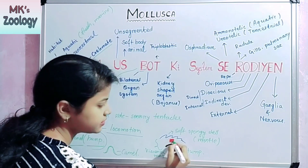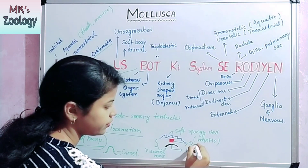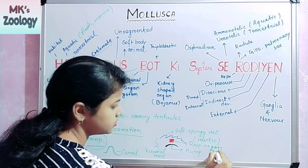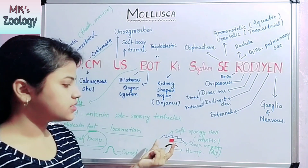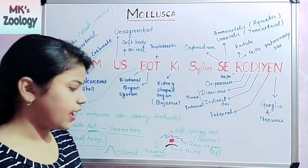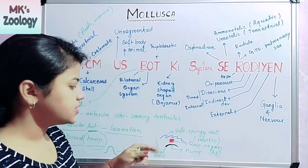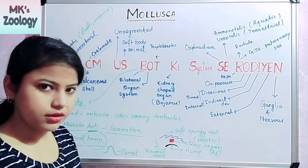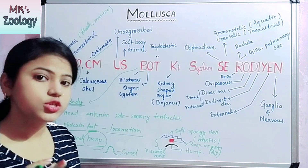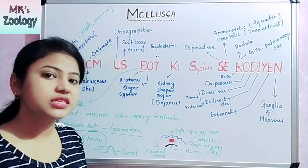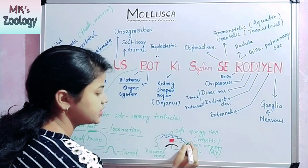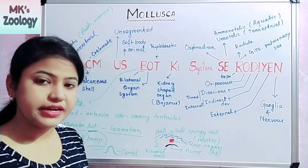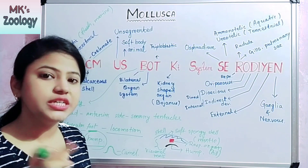The respiratory organ — which is the gill — is present in this area with all the systems. Above the visceral mass, the mantle secretes the upper layer which is the shell. The most important thing is that the mantle secretes the upper layer — the shell.